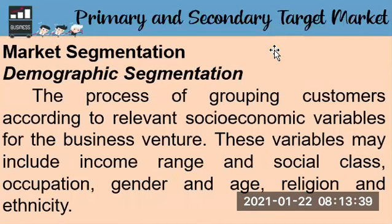The first segmentation is demographic segmentation — the process of grouping customers according to relevant socioeconomic variables for the business venture. These variables may include income range and social class, occupation, gender, age, religion, and ethnicity. This data helps the entrepreneur target customers accurately and classify their respective needs, wants, and desires. One key reason for using demographic segmentation is that it focuses on demographic data, which changes within society — therefore, the entrepreneur must be alert to these changes.